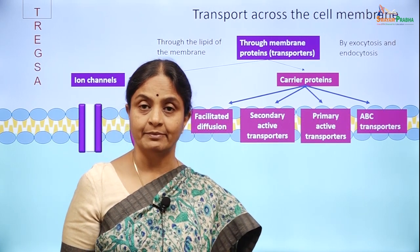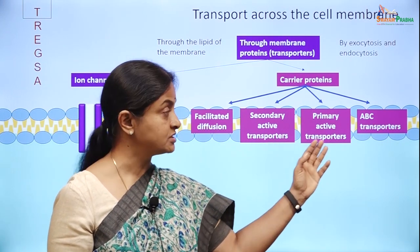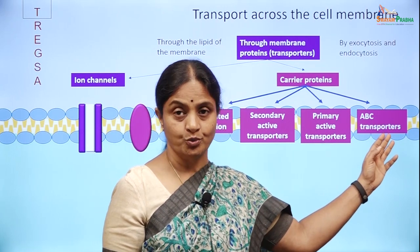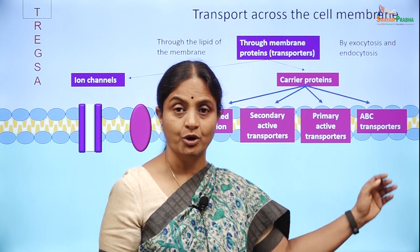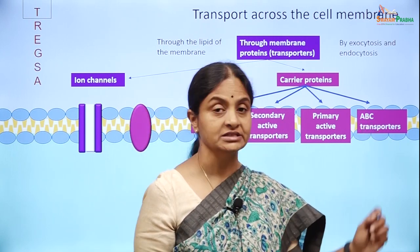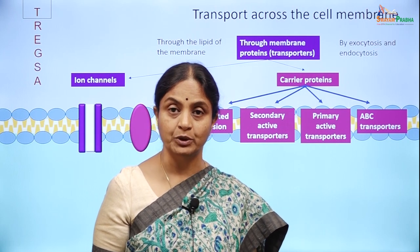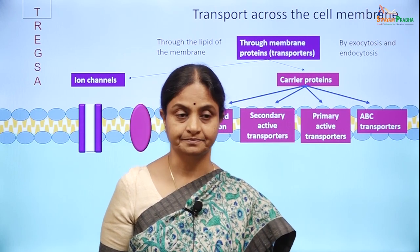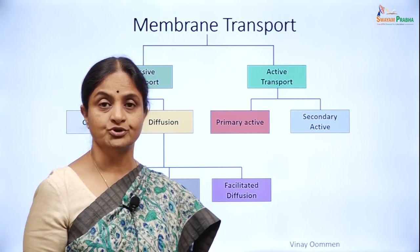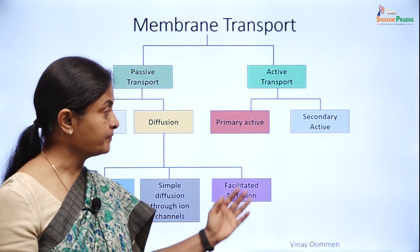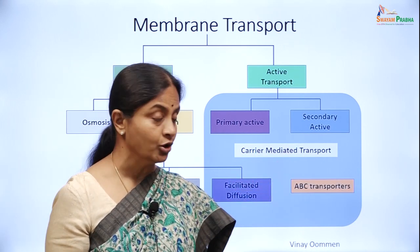The carrier mediated transport processes in the cell membrane can be classified in 4 ways: facilitated diffusion, secondary active transporters, primary active transporters. And a fourth group not usually discussed in undergraduate textbooks — ABC transporters — where ABC stands for ATP binding cassette. This group is very important in cancer therapeutics and we will consider them in some detail here.